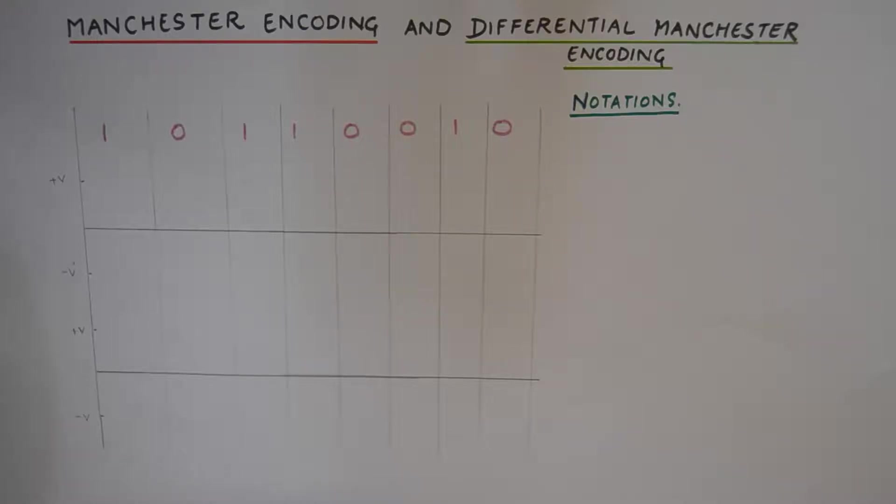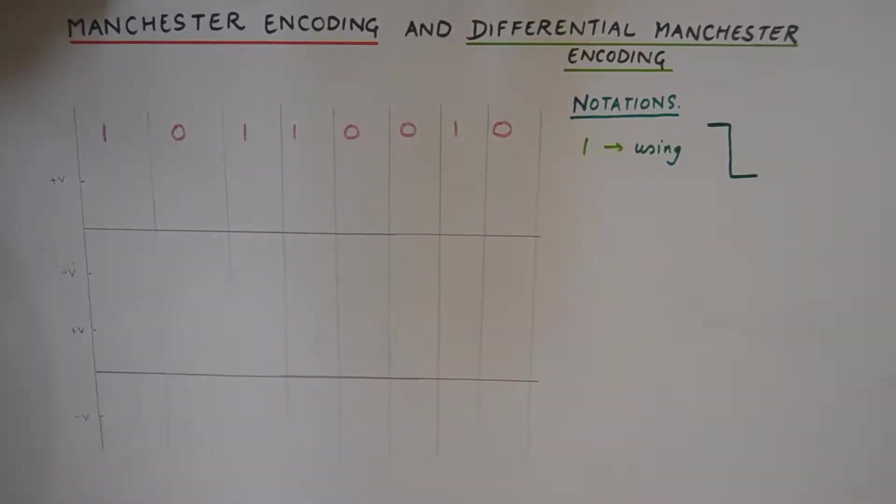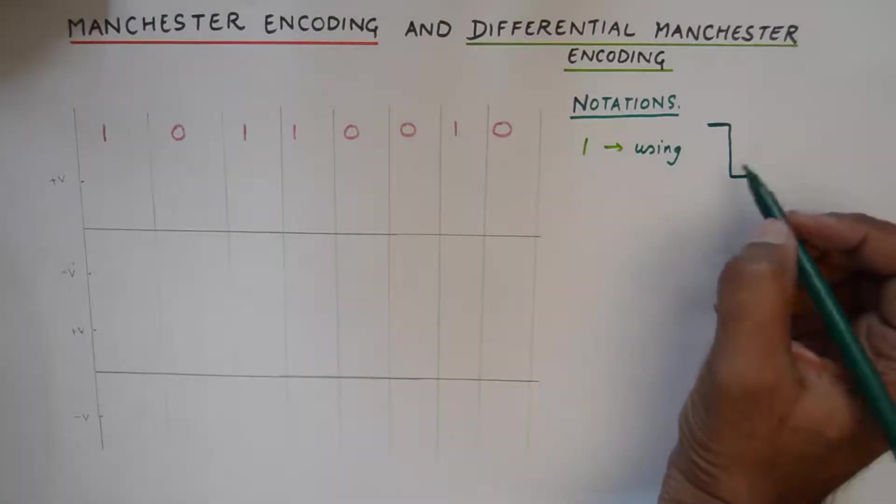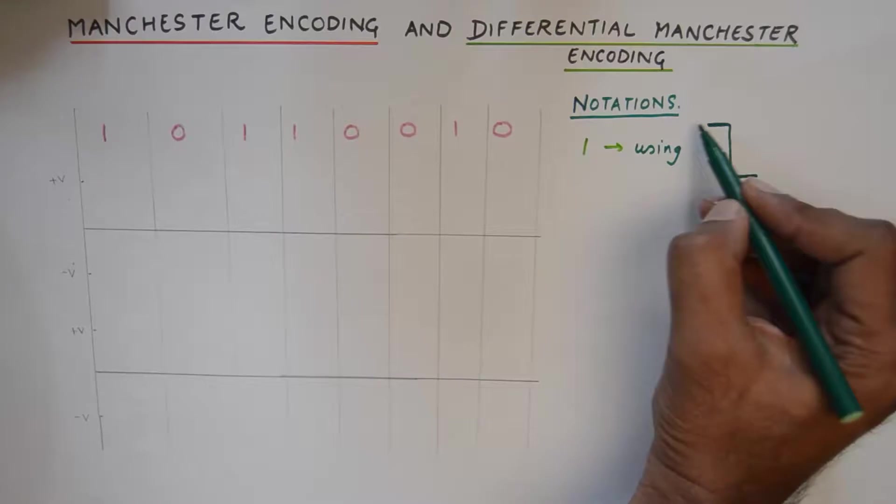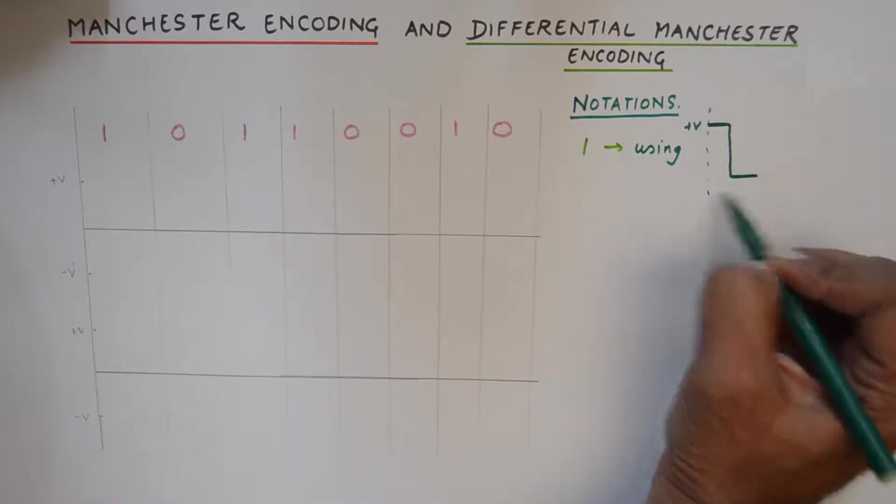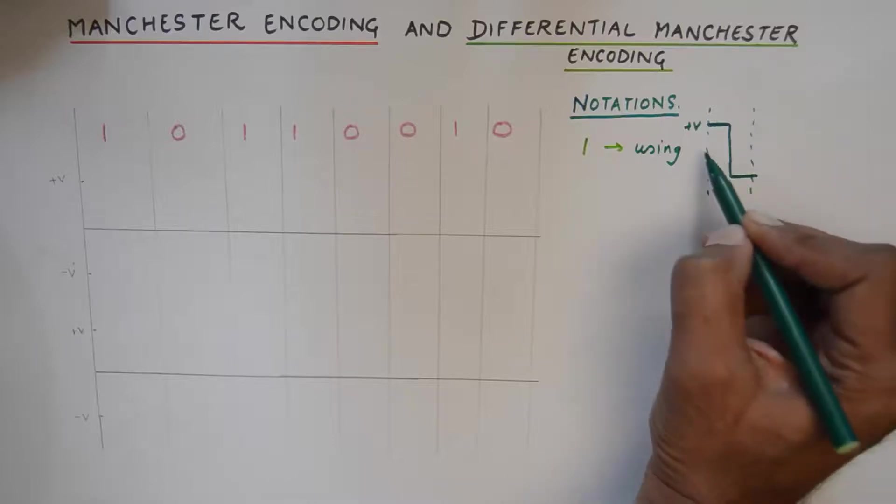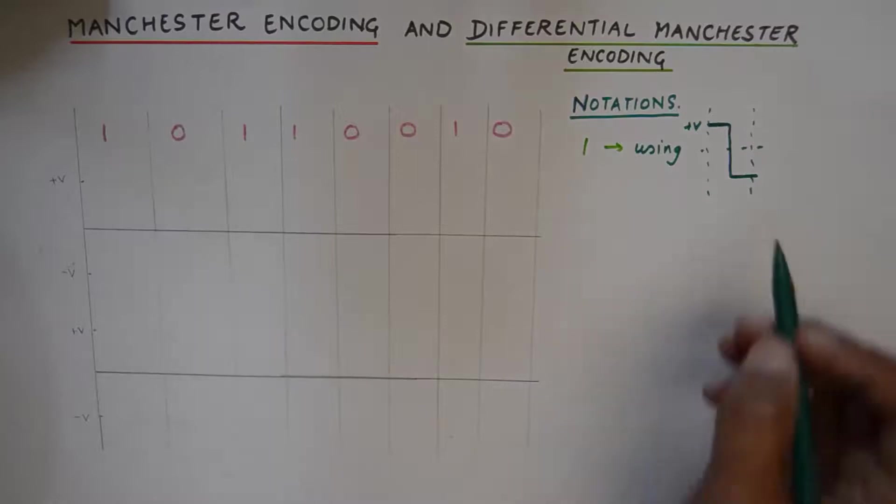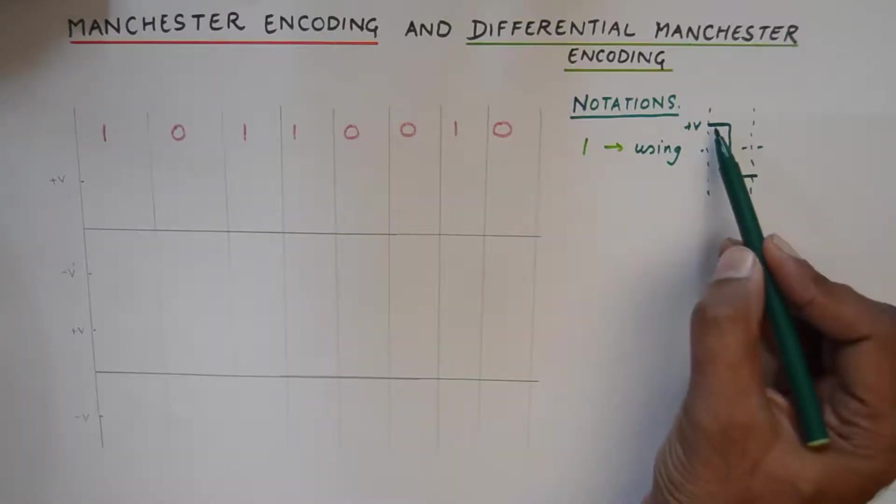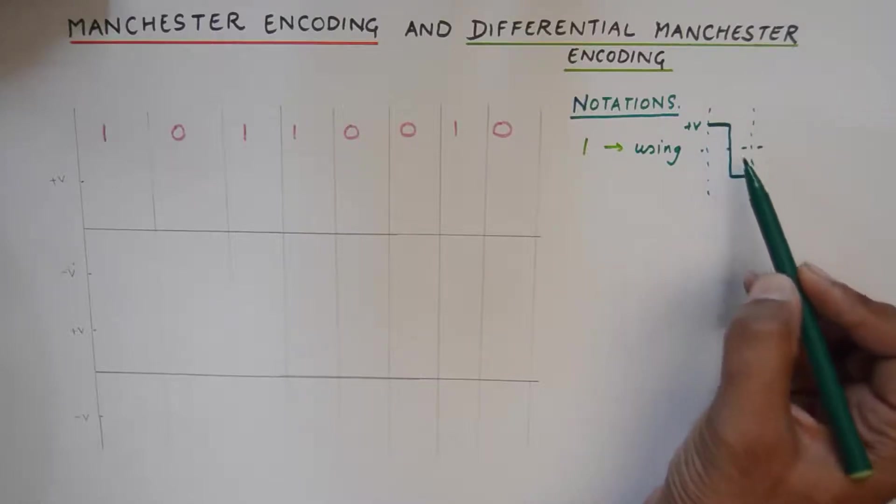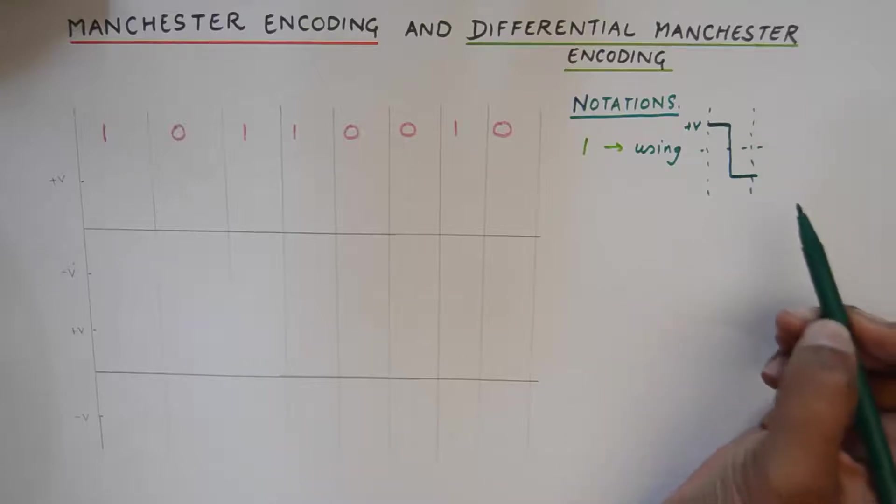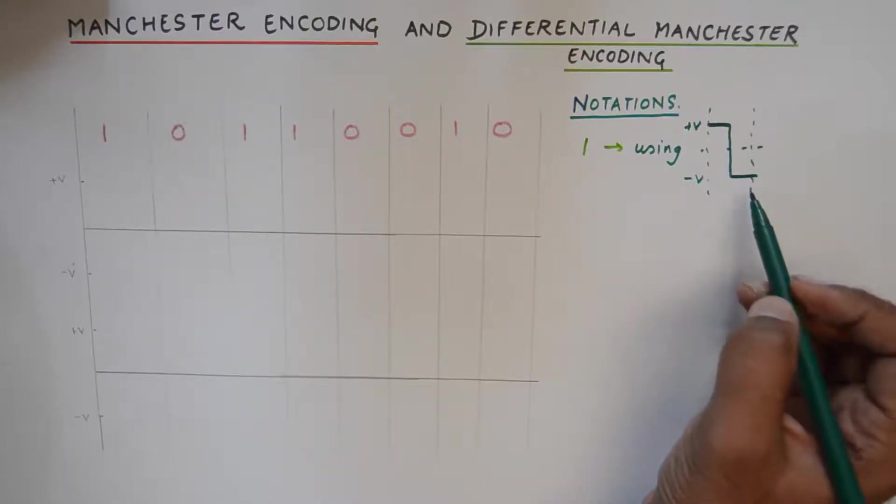Now Manchester encoding is pretty popular, this has already been discussed in the line coding techniques chapter. In this encoding technique, one is represented by keeping the signal at plus V voltage for half the bit time and then toggling it to negative V for the rest of the time. So it will stay at plus V voltage for half the bit period and will move to the negative territory to minus V for the rest of the bit period.